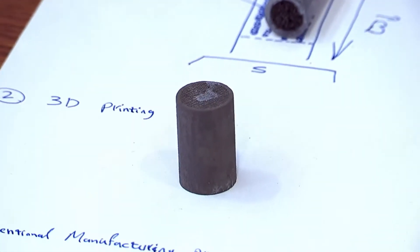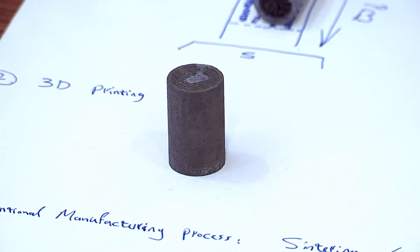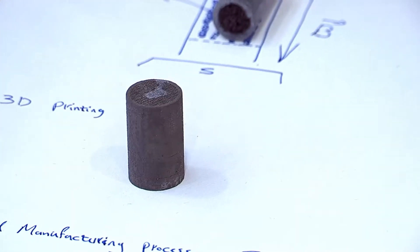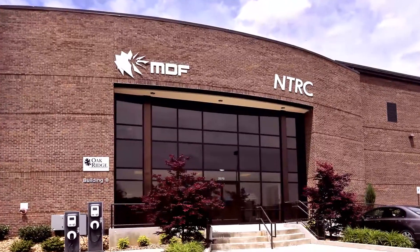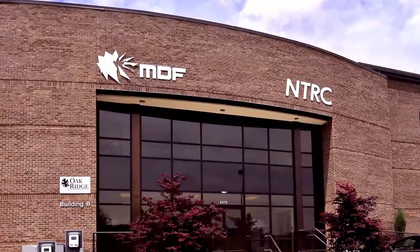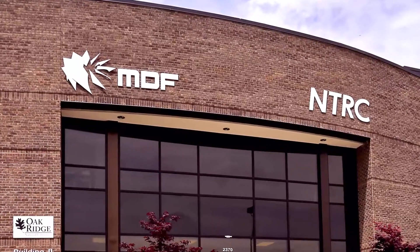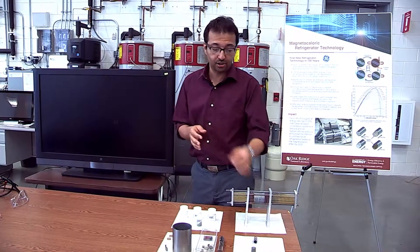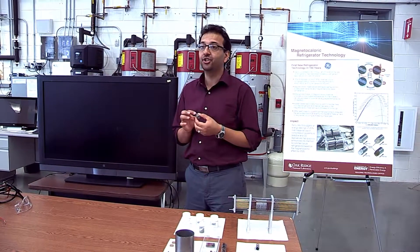The solution to resolve this issue is to make macro channels of this material. We put a lot of research in and leveraged the great additive manufacturing group we have here at Oak Ridge National Lab. With modifications on the 3D printer, we successfully 3D printed macro channels out of these magnetic-caloric materials.